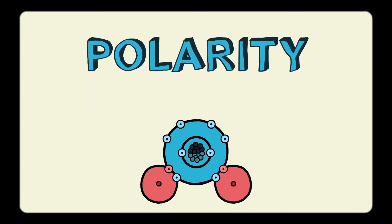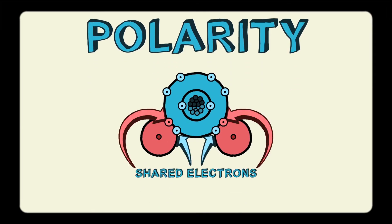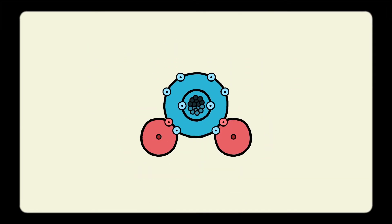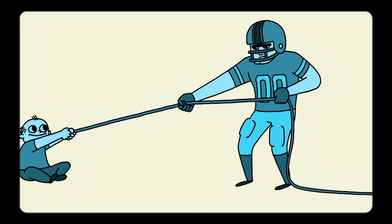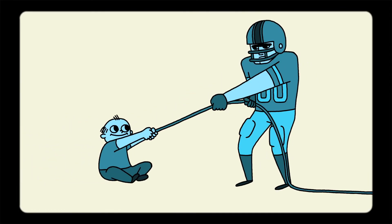Polarity refers to the unequal sharing of electrons within a molecule. For water, the bonding between the oxygen atom and two hydrogen atoms within a single water molecule is like a tug of war between a big, strong football player and a cute little toddler.